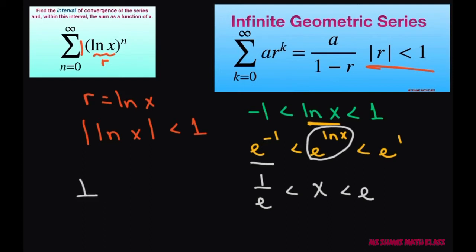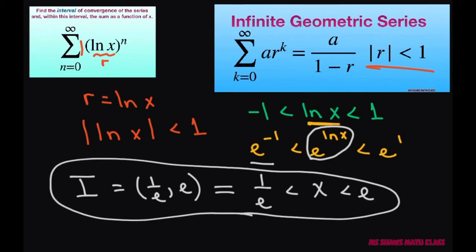So your interval of convergence equals 1 divided by e comma e or you can write it this way. Either way all of this depends on how you want to write it.